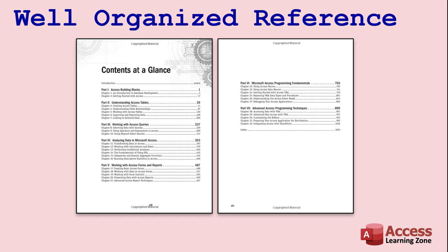Part 1 explains the overall structure of an Access database. Part 2 is all about tables. Part 3 covers queries. Part 4 is about analyzing data and working with calculations, SQL, aggregate queries, and all kinds of other information. Part 5 covers forms and reports, which are very similar. Part 6 gets into macros and some VBA programming. And finally, Part 7 talks about advanced techniques for developers.